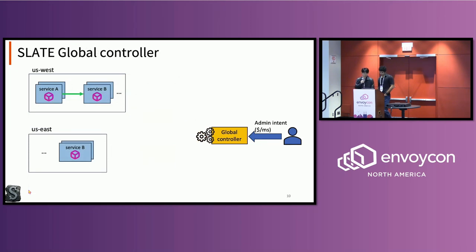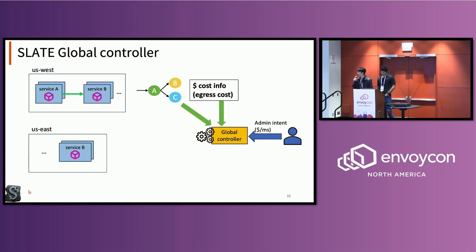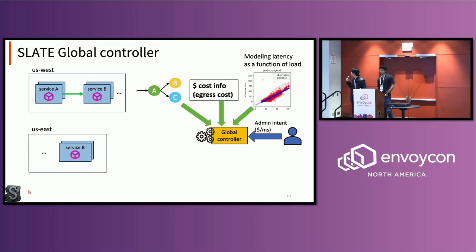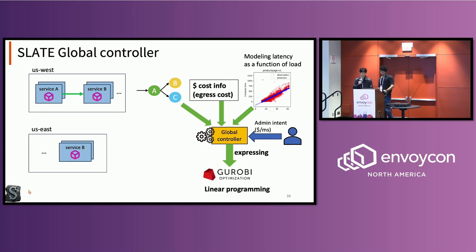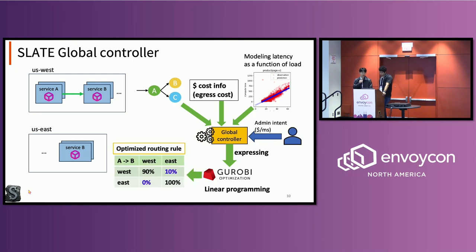Inside the global controller, we receive topology information, cost information, and latency information. Latency is modeled as a function of load — right now we're using linear regression, where the X axis is load and the Y axis is compute time for a particular service. We do this for every service, for every cluster. You can use simpler functions like a step function, or more complex ones like a machine learning model. We express it into one problem formulation, put it into the Gurobi framework, use linear programming, and output optimized routing rules. For example, for request flow from A to B, in the West cluster we route 90% of the load locally and 10% to the remote East cluster.